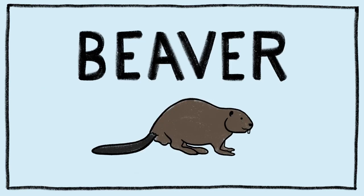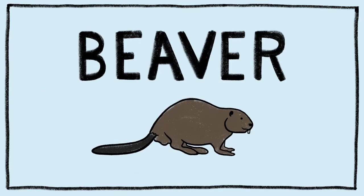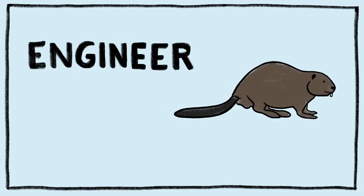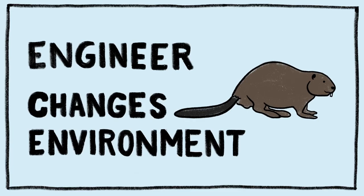Next is a beaver. This keystone species is an ecosystem engineer, which means he changes his environment. A beaver creates beaver dams, which help change the flow of a river and cause different environments for the animals and plants around them.